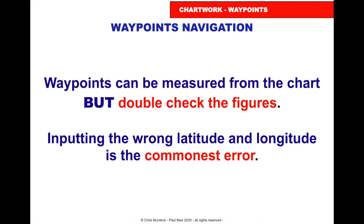Waypoints can be measured from the chart, but double-check the figures. Putting in the wrong latitude or longitude is the commonest error. If you're using Navionics and you put it across a line, a wreck, or a rock because you haven't zoomed in, that is also a common error — and we'll look at that under the Navionics waypoint routing tutorial.